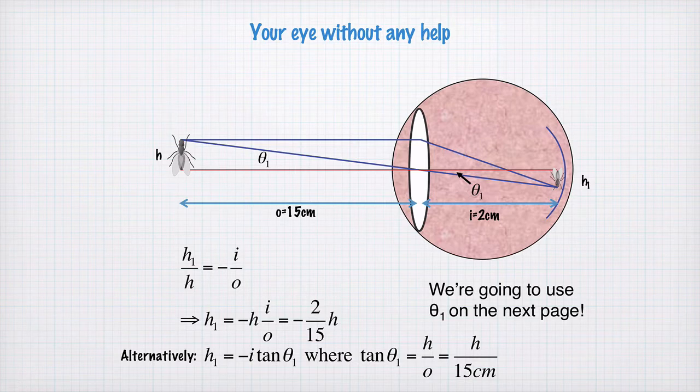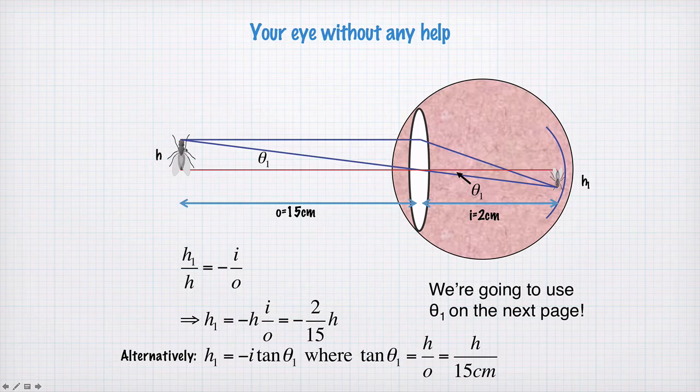So, here's your eye without any help. We have the object that we're trying to look at with some height h. This gives you some angle theta1, which is the maximum angle of light entering your eye. And we have a theta1 over on this side as well, because they're similar triangles. And we end up with an image here with height h1 on your retina. And we have the object and image lengths here. This is the distance in your eye, and this is the closest your lens and your eye can focus.